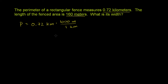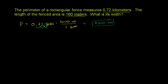Also, if you care about dimensional analysis, the dimensions cancel out here too. We have kilometers in the numerator and kilometers in the denominator. So when you multiply, you have 0.72 times 1,000 meters. To multiply by 1,000, move the decimal right three spaces: 0.72 → 7.2 → 72 → 720. So the perimeter is equal to 720 meters.